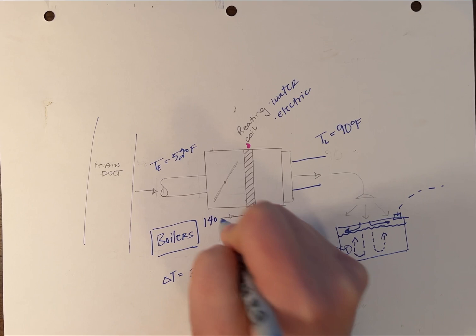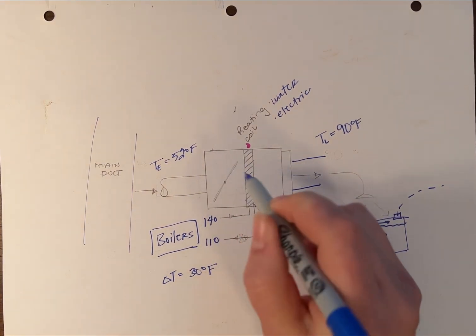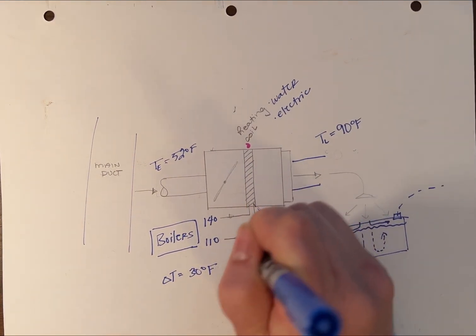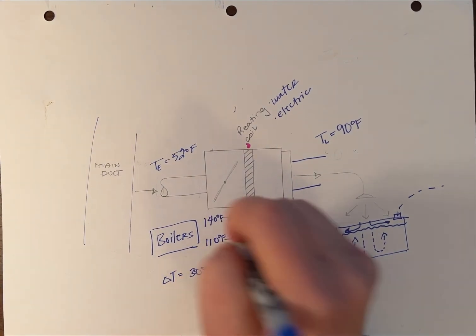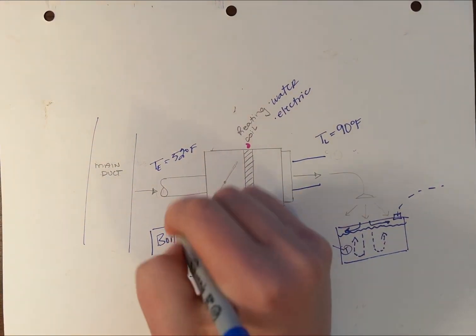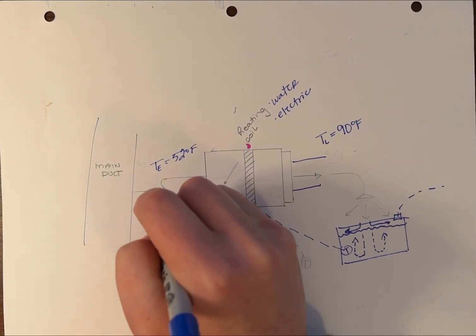140 degrees supply, and with a 30-degree delta, that's 110 degrees return. You're supplying 140 degrees, with 52-degree air running across the coil, and returning 110 degrees - that's a 30-degree delta T. It all depends on your boilers: what is your boiler supplying and returning? In this case, 140 supply and 110 return.